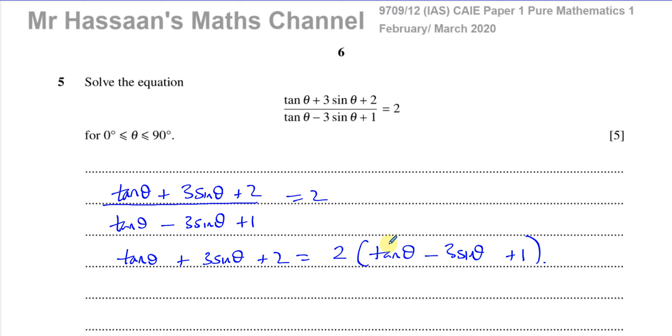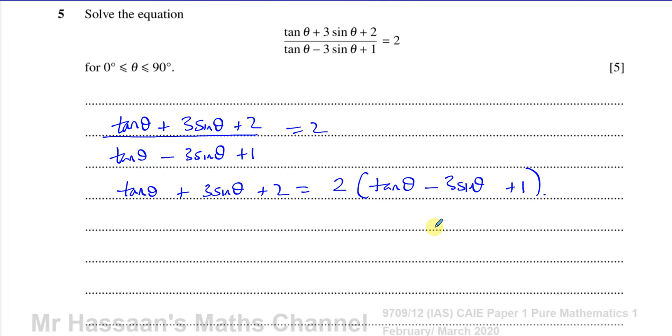It will cancel from this side and I'll end up multiplying the two. So I'll end up with tan theta plus 3 sin theta plus 2 equals 2 times tan theta minus 3 sin theta plus 1. It's always good to write this step down because sometimes you forget to multiply every term by that 2. So 2 times tan theta and 2 times minus 3, which is minus 6 sin theta and 2 times 1, which is plus 2.